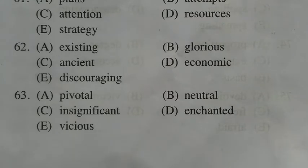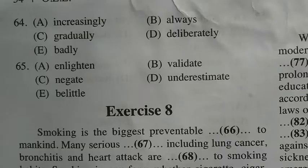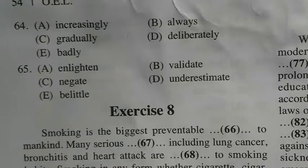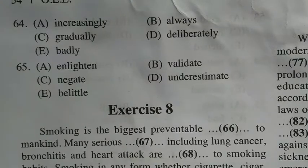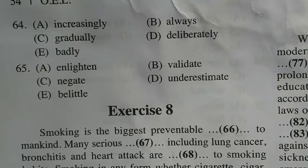The answer to question 64 is E: Japan, whose economy was 'badly' damaged from the ravages of the second world war, is the clearest example of our time. The answer to question 65 is B: to 'validate' kingpin role in economic development. So we have finished with exercise number seven.